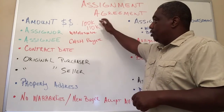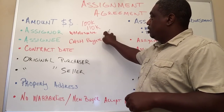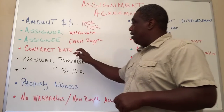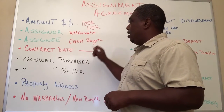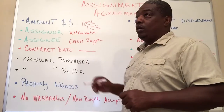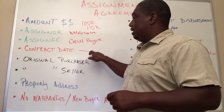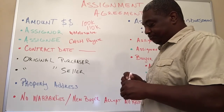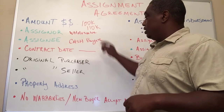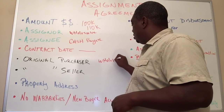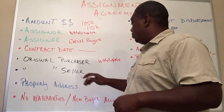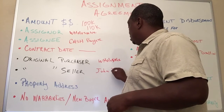So the amount, your name as the wholesaler, and the cash buyer's name or entity name. Then you need to have the contract date — what date was on the original contract between you and the original seller — and add that date onto this assignment agreement. You need to have the original purchaser's name, which would be the wholesaler, and then the original seller's name, which would be, let's just say, John Doe.